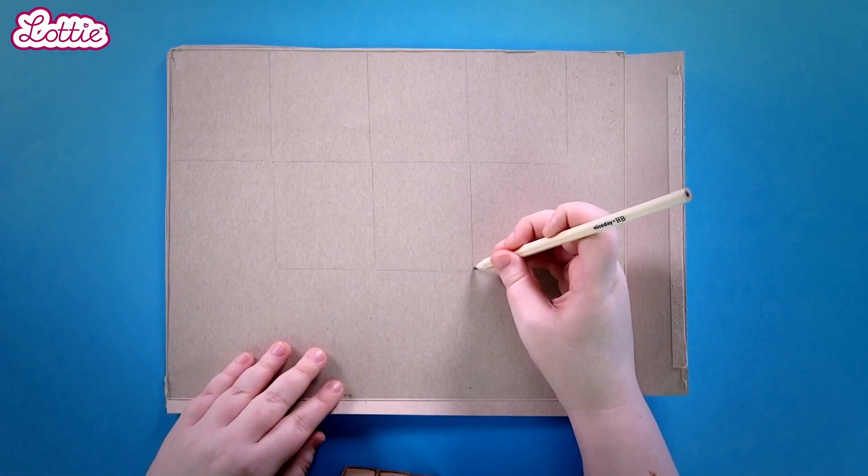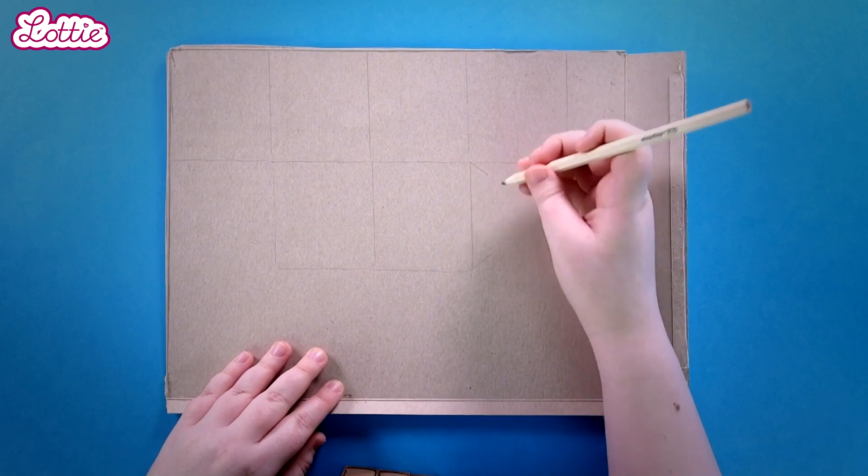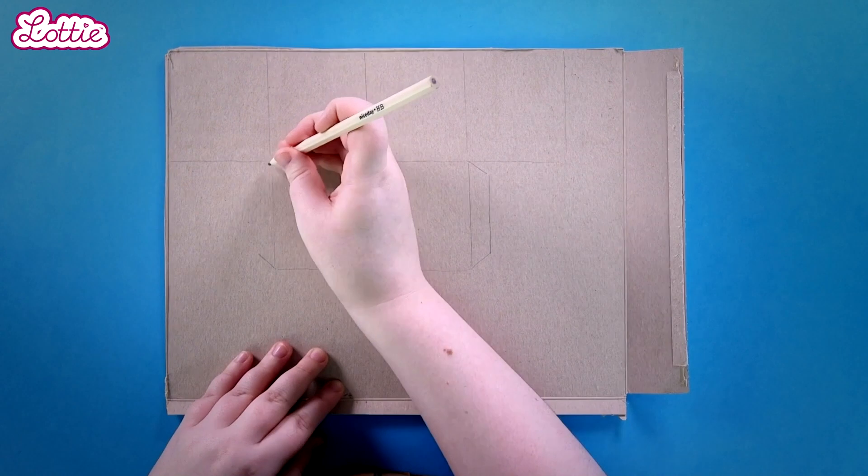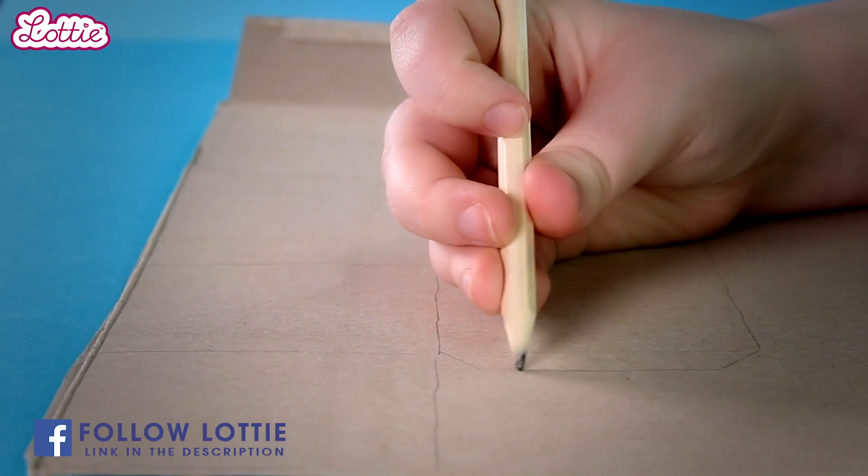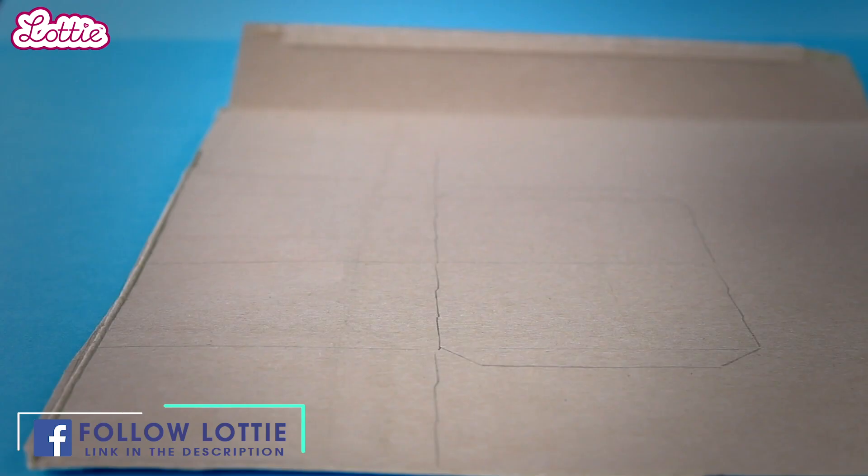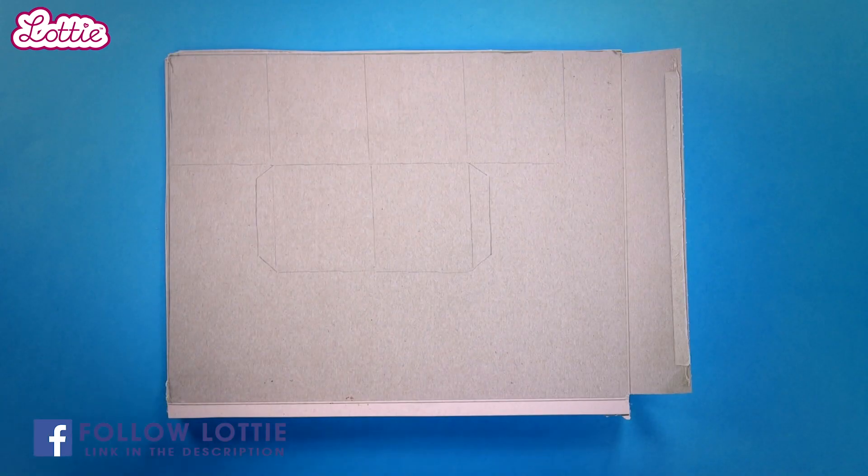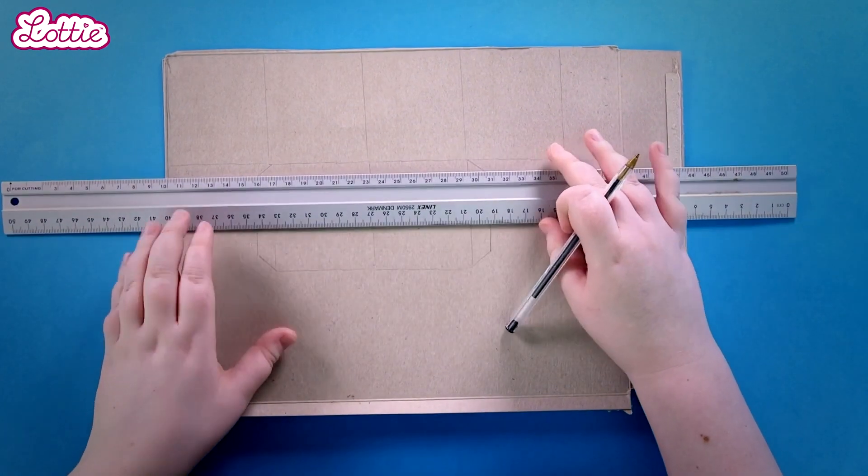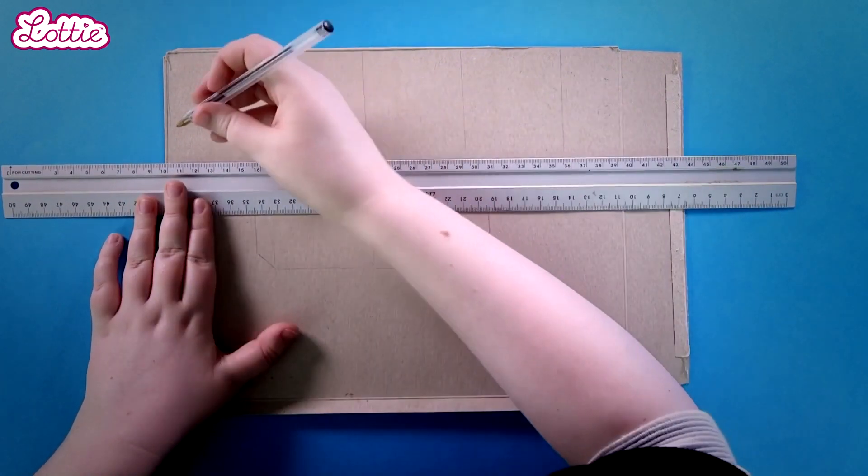When you've got something that looks like this, draw on some little shapes like this. You can do this bit freehand. It doesn't have to be perfect. If you're finding this a little tough to copy, follow the link in the description below to download a printable pattern. Now let's use a ruler and pen to make sure the outline is good.